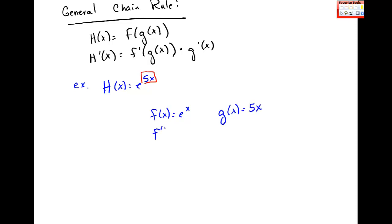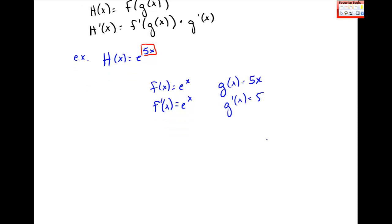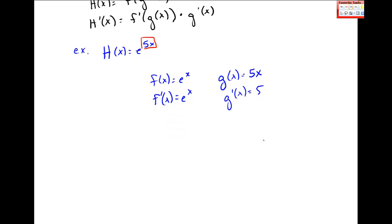f prime, I know what that derivative is. It's e to the x. And g prime is just 5. So I'll use this general chain rule. Not the general power rule, this general chain rule. So h prime of x is f prime of g of x times g prime of x.